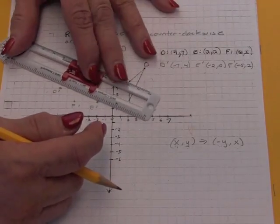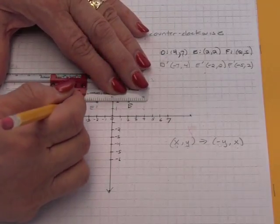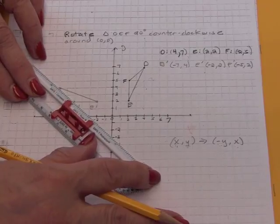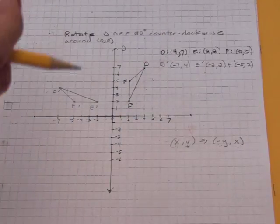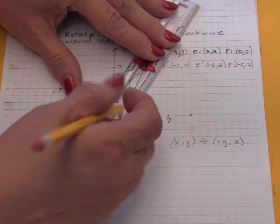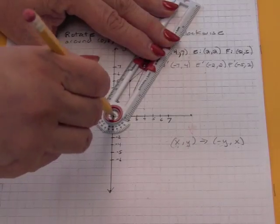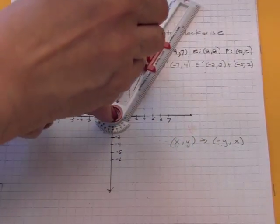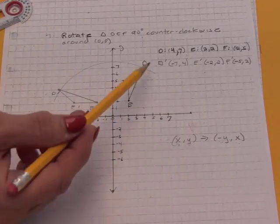Now, you can ask yourself, how do I know that this is even a rotation? Well, we can take our compass and we can look at what we would get if we consider how far is D from the center. Notice that I'm putting the center of the compass at (0,0), which is our center of rotation.